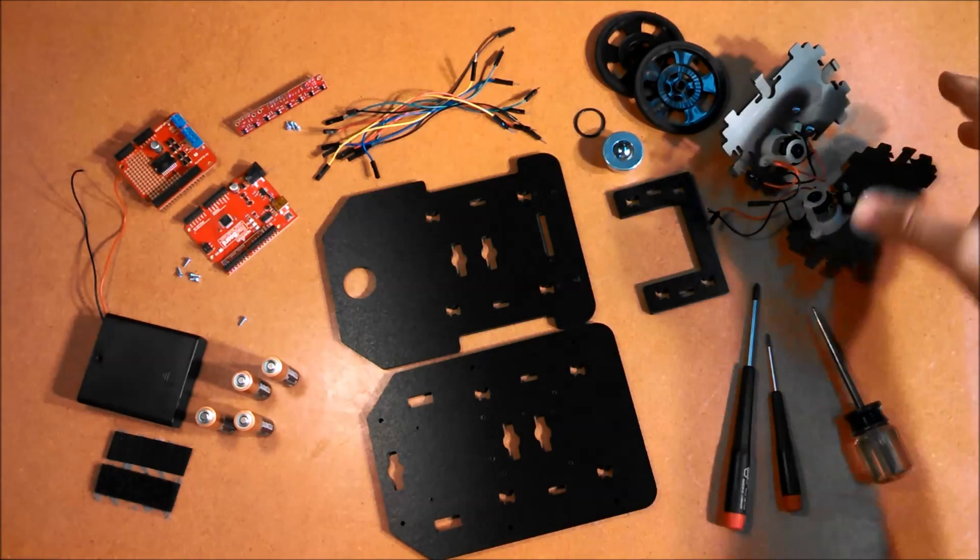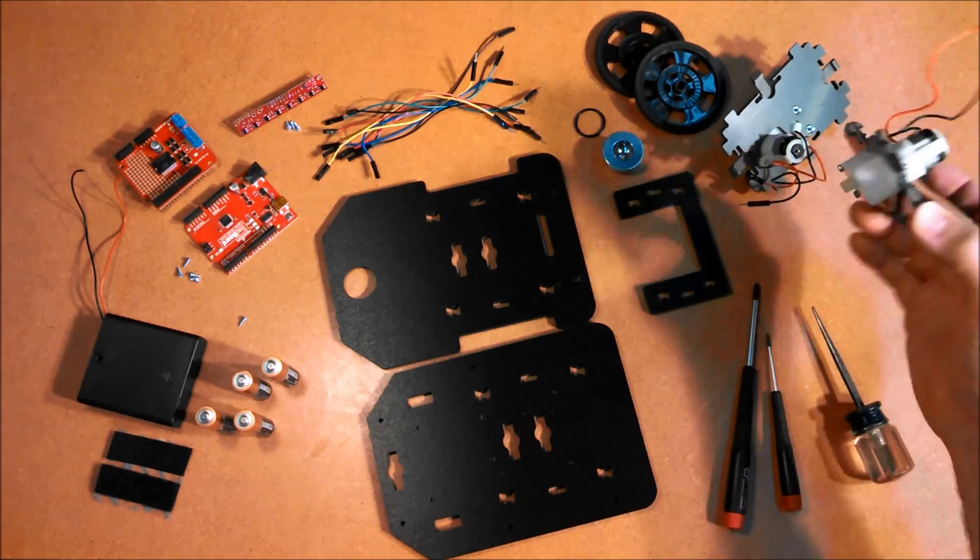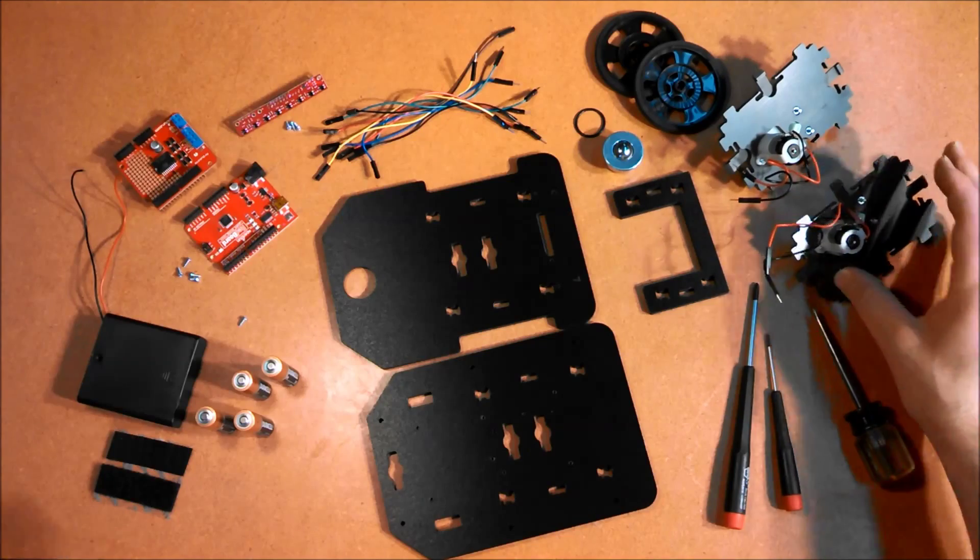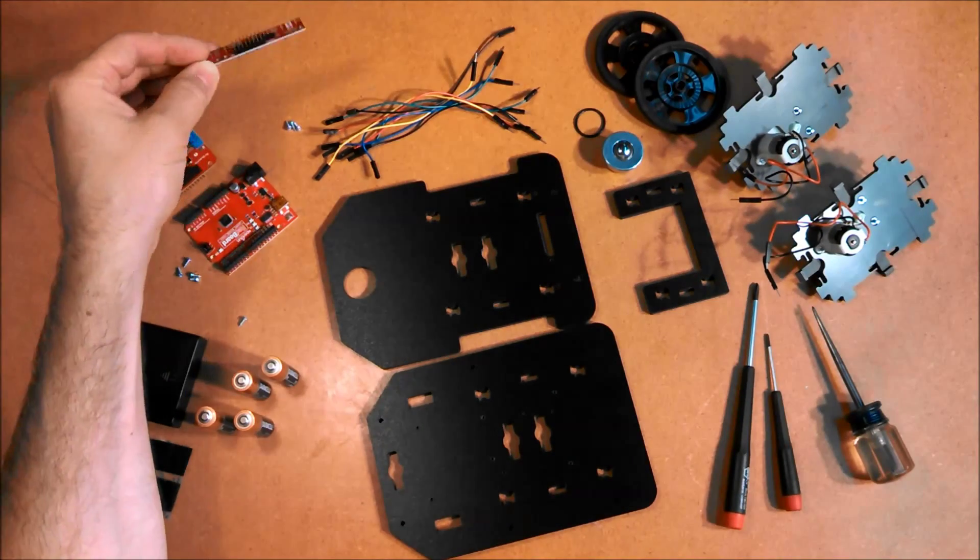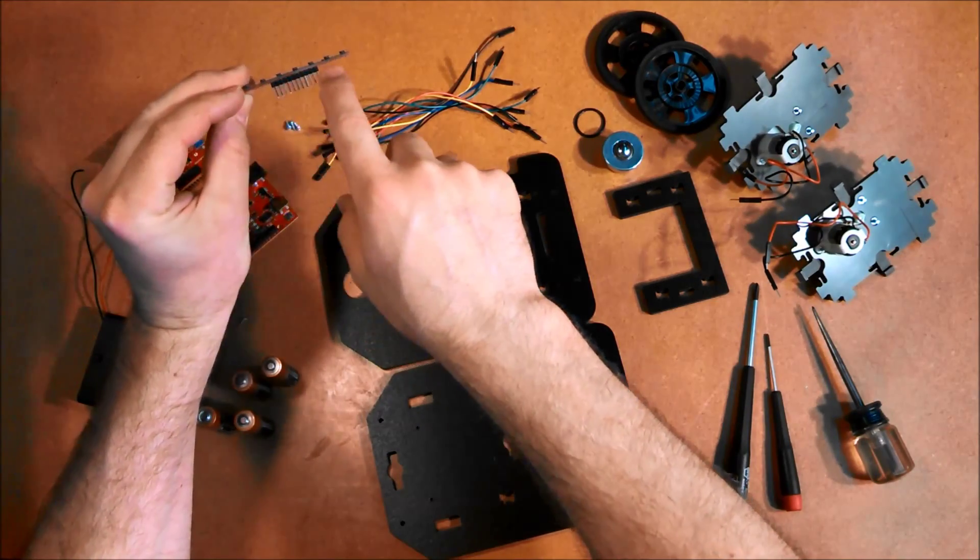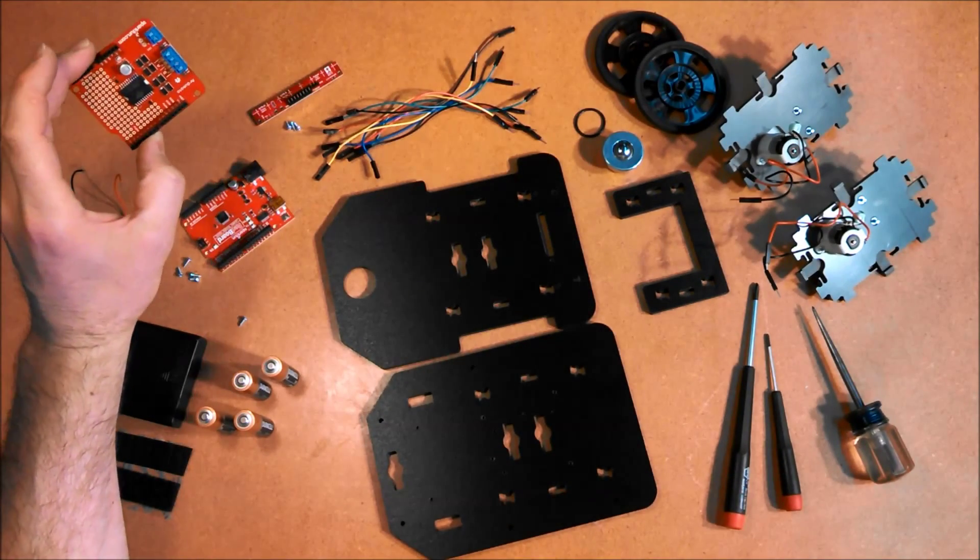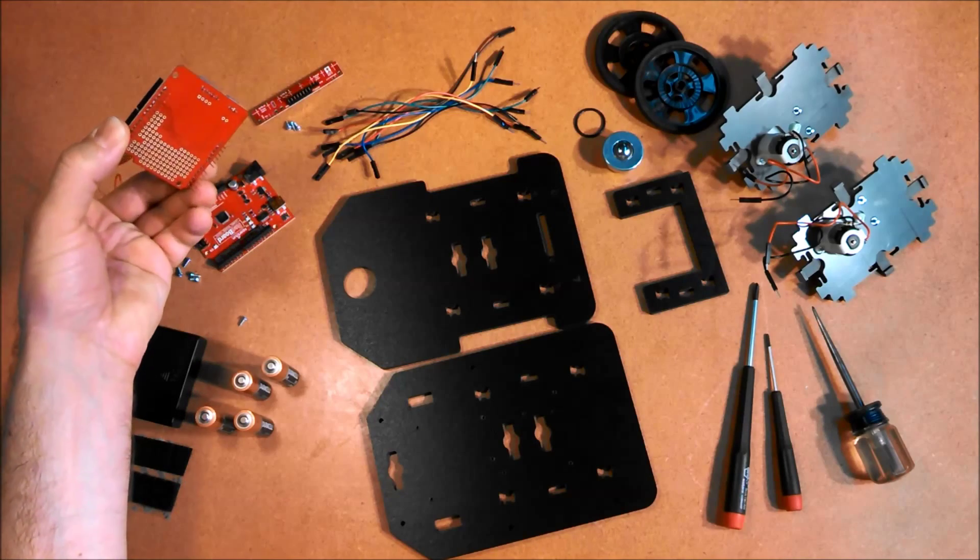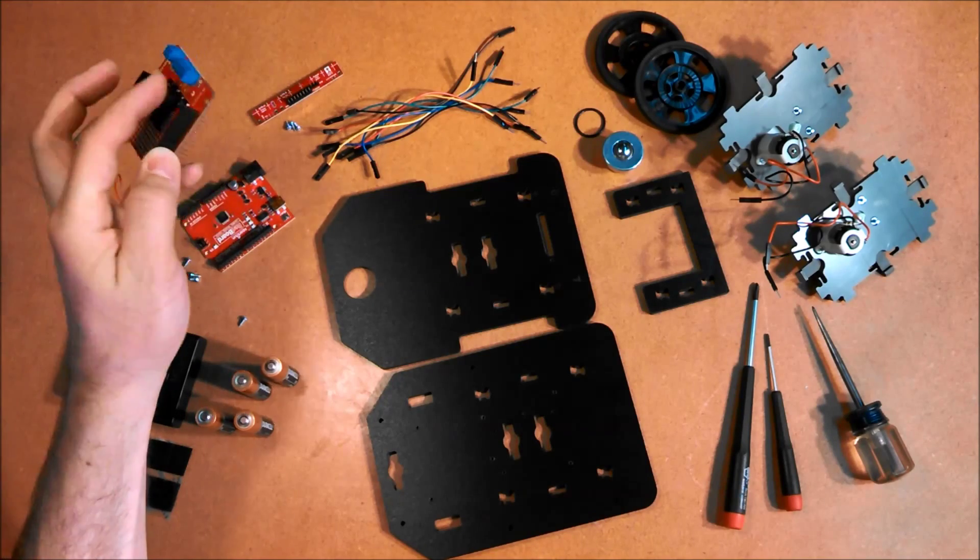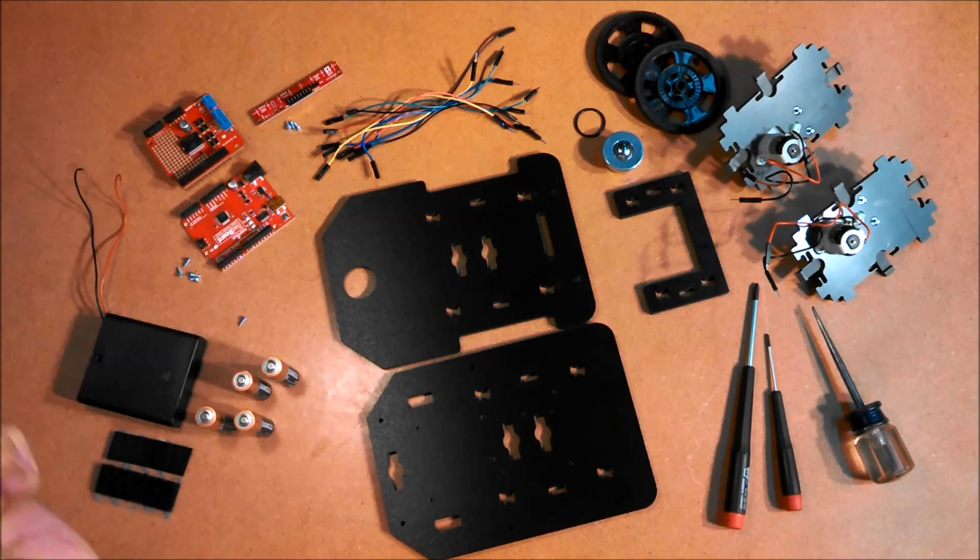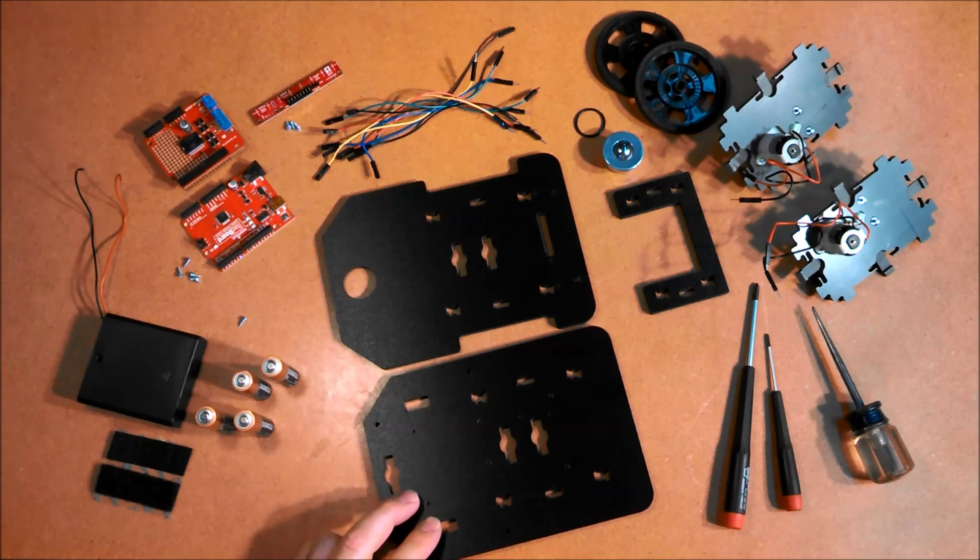To save a little time, I've assembled the motors to the motor brackets and I've soldered up the Pololu line sensor, which is just two headers. We're going to use this back one here. The SparkFun Ardumoto board we've already soldered up with the headers and the terminals. That's the SparkFun Red Board. So let me go ahead and start putting this together.